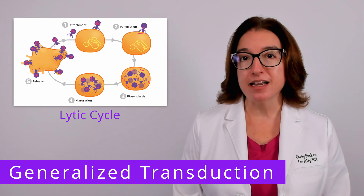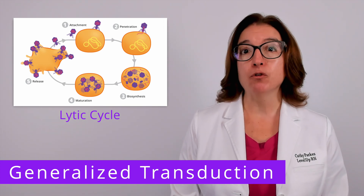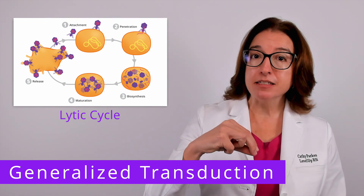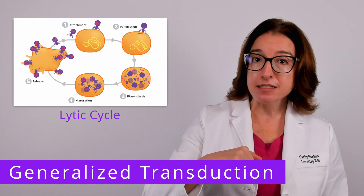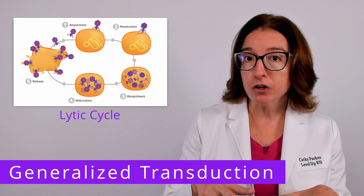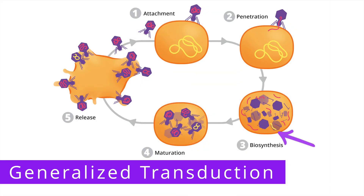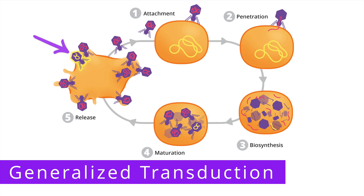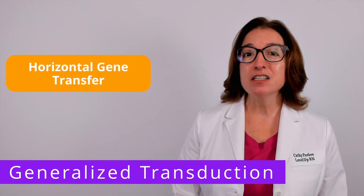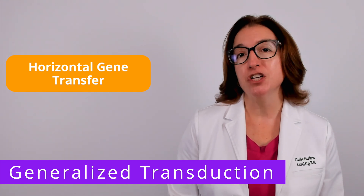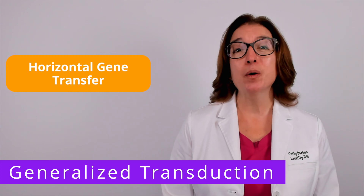Let's first talk about generalized transduction. As a review, during the lytic cycle of viral replication, the bacteriophage attaches to the bacterial cell, injects its genome into the cell, hijacks the cell's machinery to make new viral particles, and then those viral particles are released when the cell lyses or bursts open. Sometimes when the phage is assembling those new viral particles, it accidentally inserts a random piece of the host cell's DNA into the capsid, which means that when the host cell lyses and that new virus is released, it will go on to infect a new host cell and inject that bacterial DNA into another bacterium. The transfer of genes from one bacterium to another is a form of horizontal gene transfer, which introduces genetic diversity into a bacterial population.